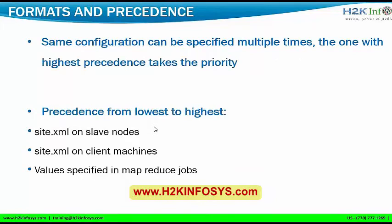The next thing is formats and precedence. The same configuration can be specified multiple times — the one with the highest precedence takes the priority. Suppose in a cluster I have 100 machines; on each machine I will be declaring the configurations. There will be some precedence on pulling these configurations. The precedence from lowest to highest is: site.xml on slave nodes takes the lowest priority — maybe my data node has some configuration in site.xml, that will take my lowest priority. The second priority goes to site.xml on the client machine.